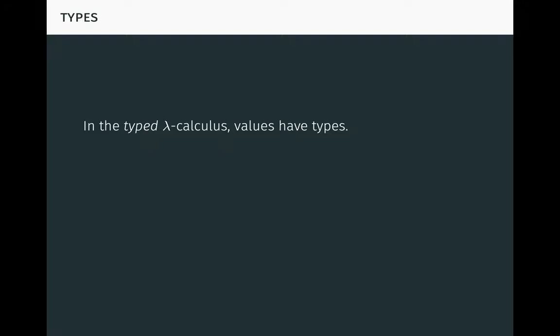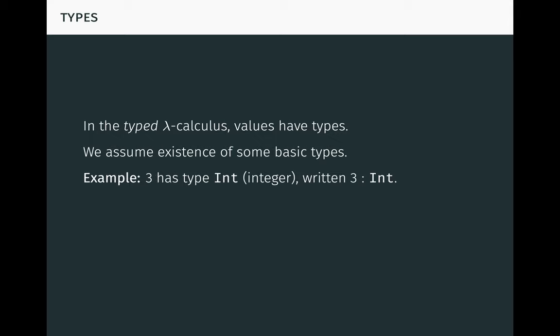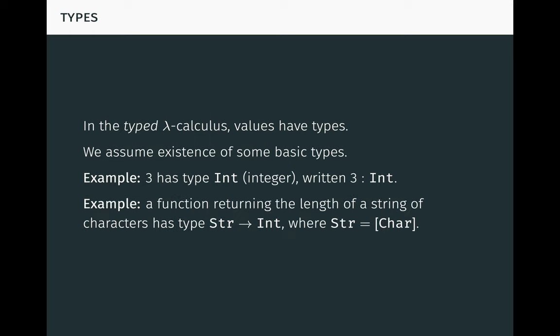In the typed lambda calculus, values have types. We're going to assume the existence of some basic types in what follows. For example, the integer 3 has type int, written 3: int. As another example, a function returning the length of a string of characters has type str → int, where str is by definition the type list(char). It's important to see that the arrow here acts as a type constructor. Given two types, in this case str and int, it returns a new type, in this case the type of functions from str to int. That is, the type of functions that take a string as input and return an integer as output. Similarly, the list bracket is a type constructor. Given a single type, in this case char, it returns a new type, in this case the type list(char). That is, the type of lists of characters.